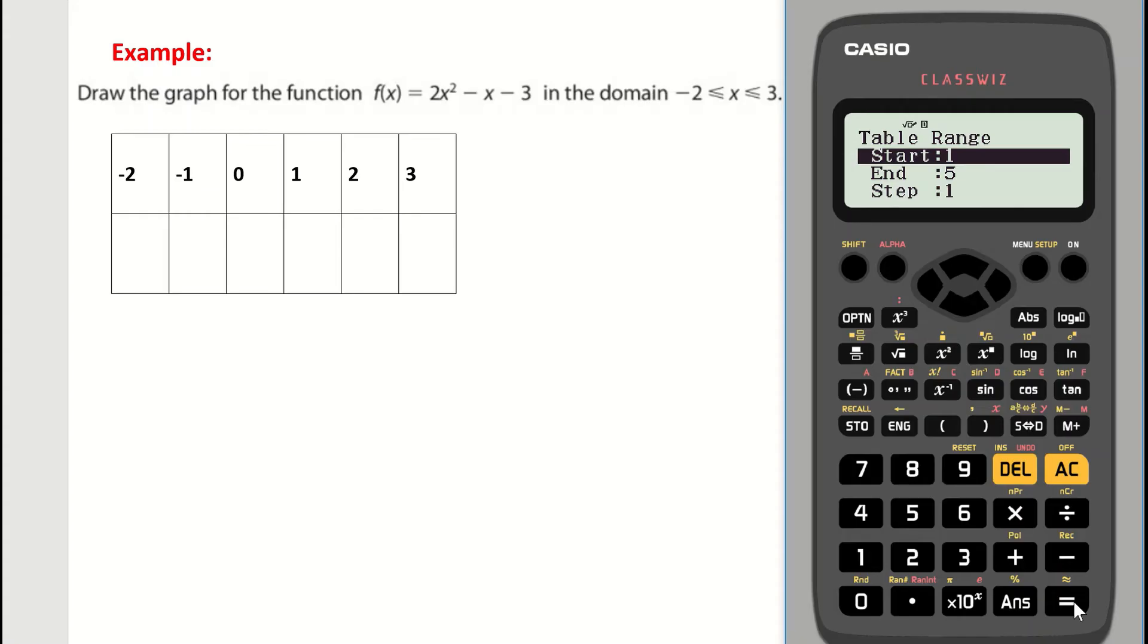So up comes my table range. Where do I want my data to go to and from? So I want to start at -2, so I just type in -2 here. I press my equals key and it'll bring me then to end. Where do I want to end? I want to end when x is 3.